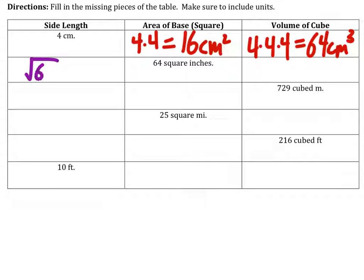The side length on this one is the square root of 64, which is 8. And then this one is inches. The volume of that cube would be 8 cubed, which equals 512 inches cubed.